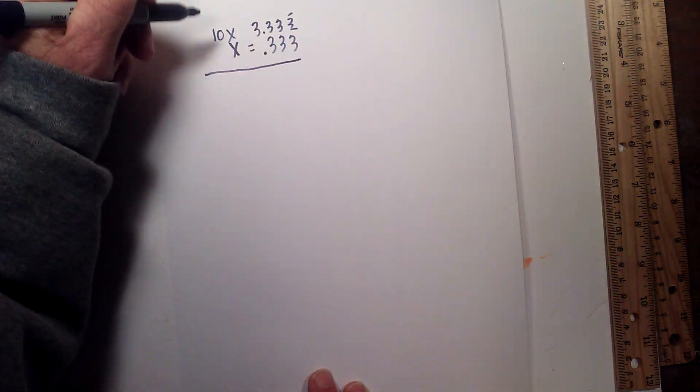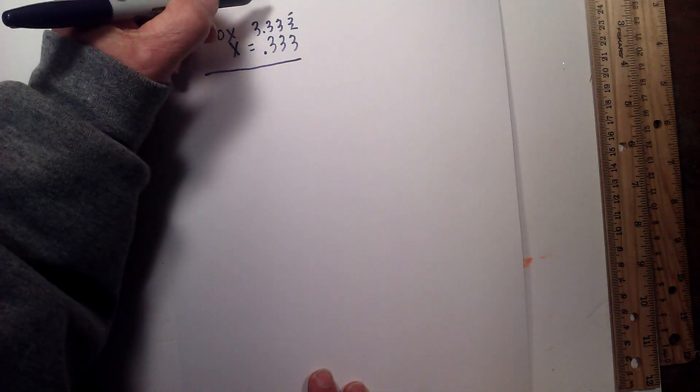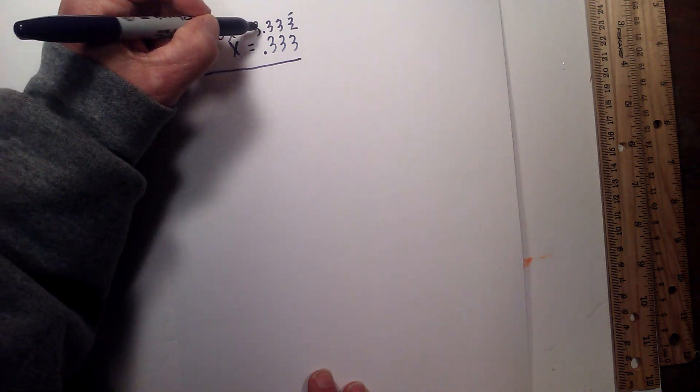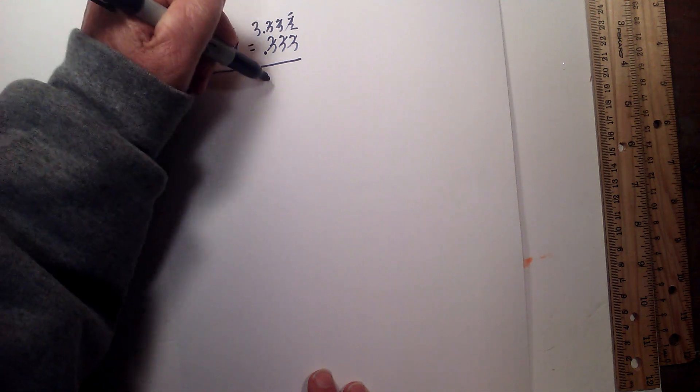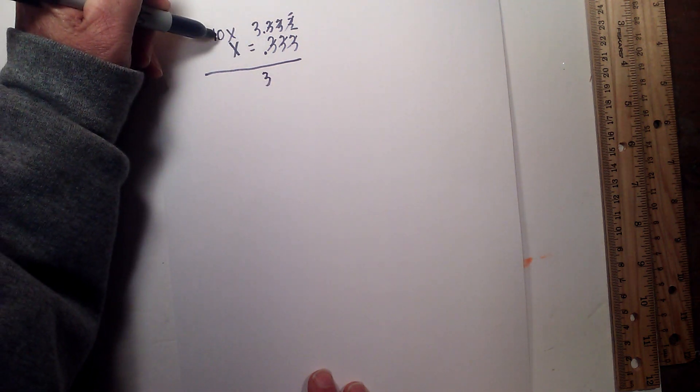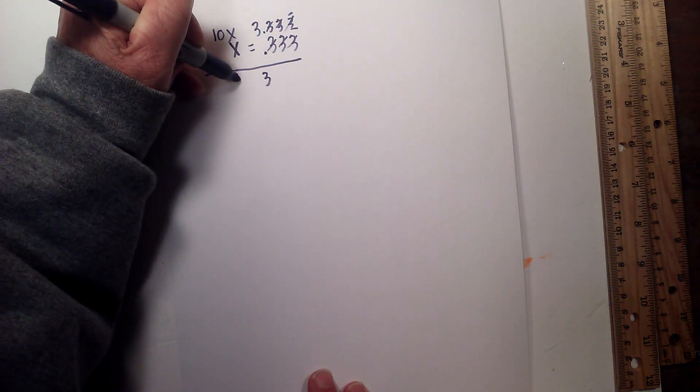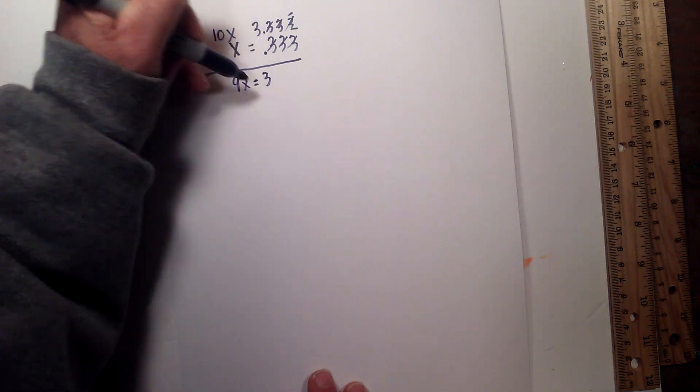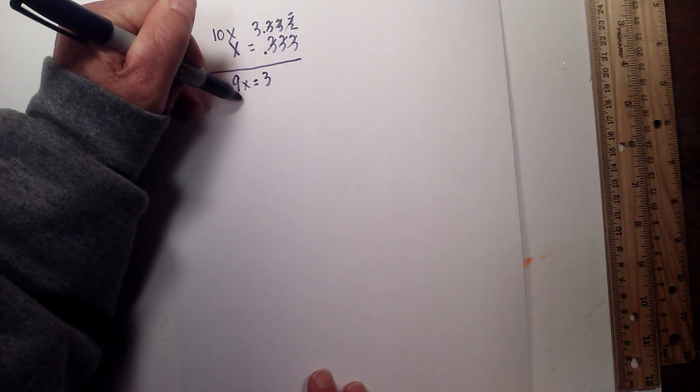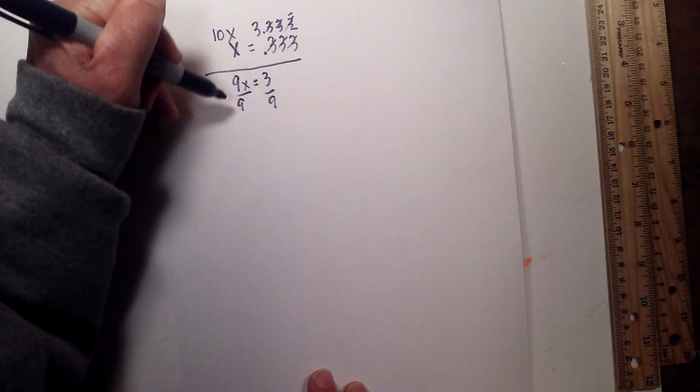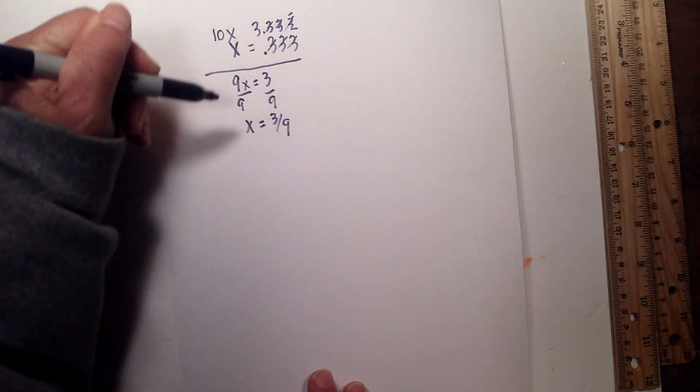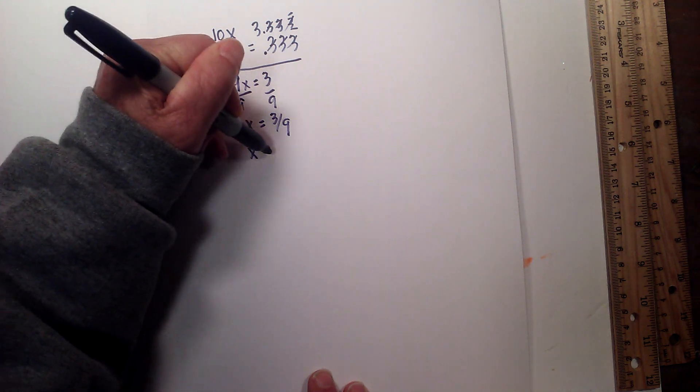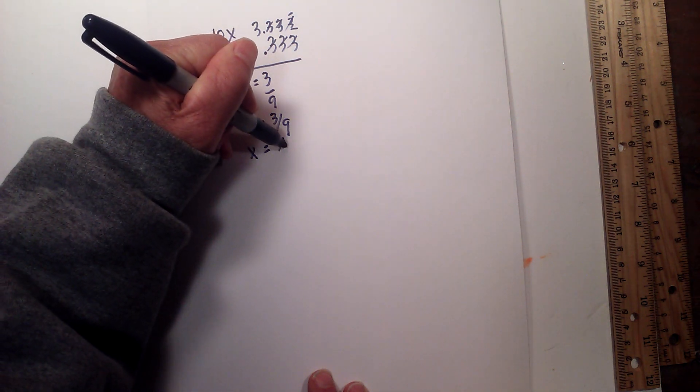Okay, so now all we have to do is subtract and solve. These would all cancel and you would be left with 3, and then 10x minus x equals 9x equals 3. Then divide both sides by 9, and so x equals 3/9, and that can be reduced to 1/3.